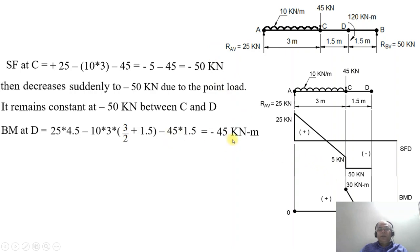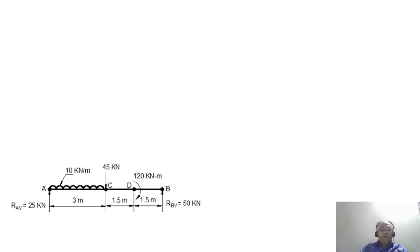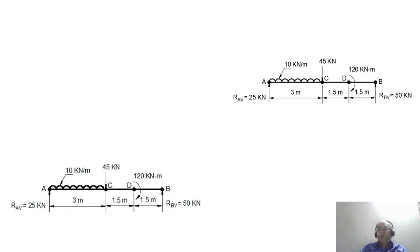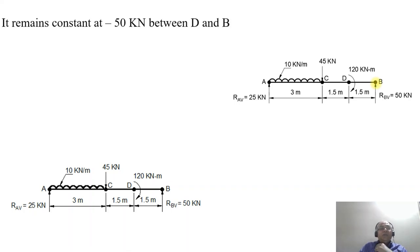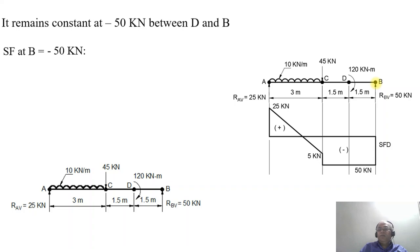So from plus 30 kilonewton meter, the bending moment drops to minus 45 kilonewton meter at D. Between D and B, there is no additional load, so the shear force remains constant at minus 50 kilonewton. The couple at point D does not affect the shear force diagram. At point B, SF equals minus 50 plus 50, giving 0, completing the shear force diagram.